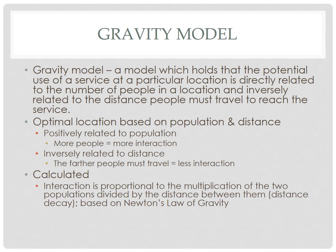Here is our definition for this unit: the gravity model holds that the potential use of a service at a particular location is directly related to the number of people in a location and inversely related to the distance people must travel to reach that service. A positive correlation means as one element goes up, so does the other — more people means more interaction. An inverse relationship means as distance goes up, interaction goes down, which is a perfect example of distance decay.